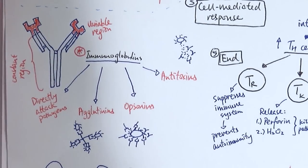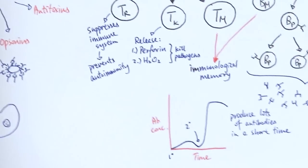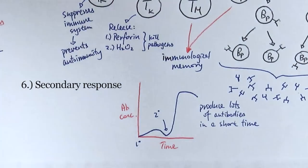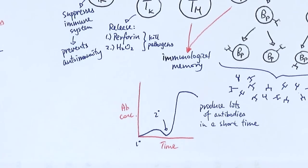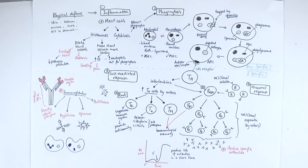The T memory cells and B memory cells stay in the bloodstream. If the same pathogen comes in again — for example, if the first exposure was due to a vaccination — the second time around it is recognised very quickly. The body skips the first two non-specific stages and goes straight into a specific response, producing large amounts of antibodies in a very short time, killing pathogens before symptoms appear. And that is the overview of the immune response.